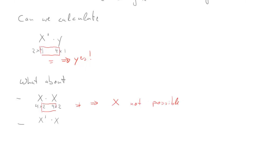X prime is 2 by 4, X is 4 by 2. So now the inner dimensions do agree. And that means we can calculate this. So this calculation is possible.